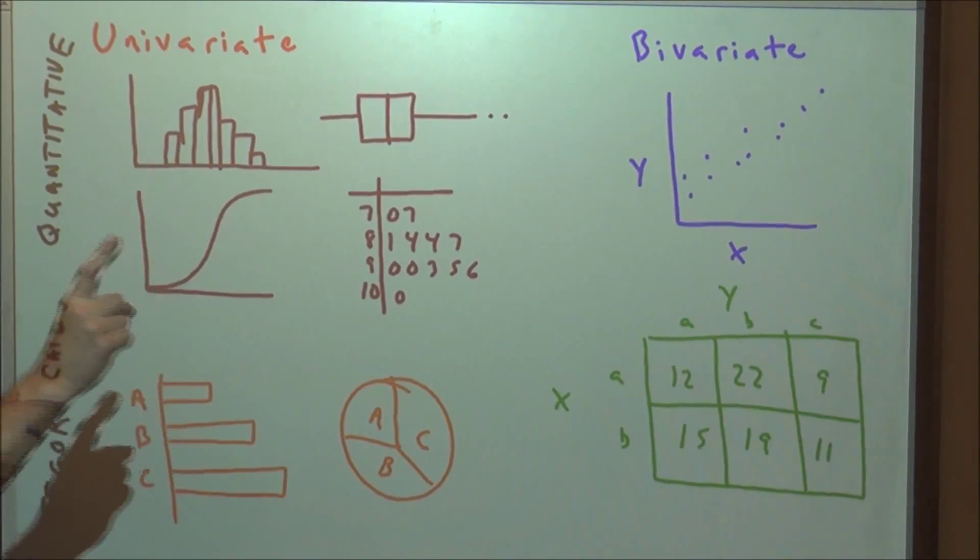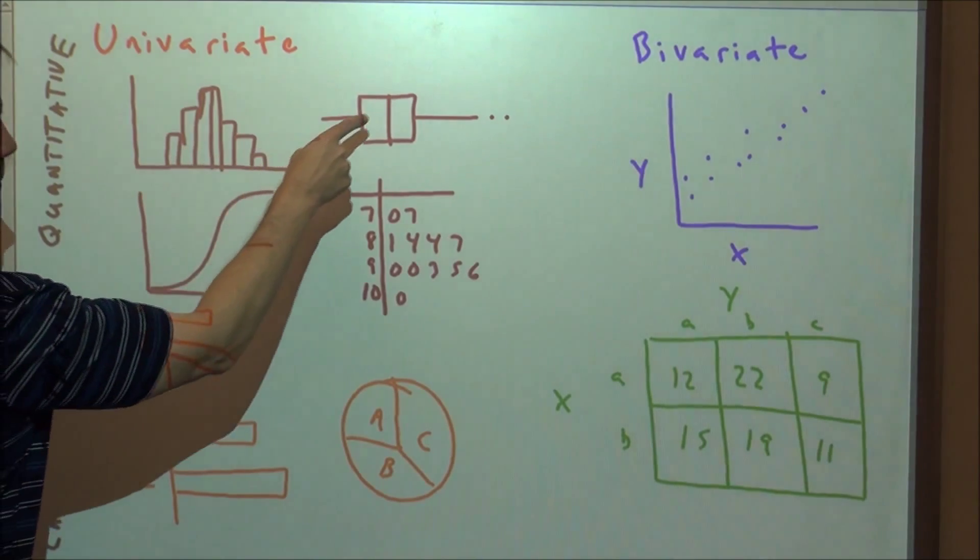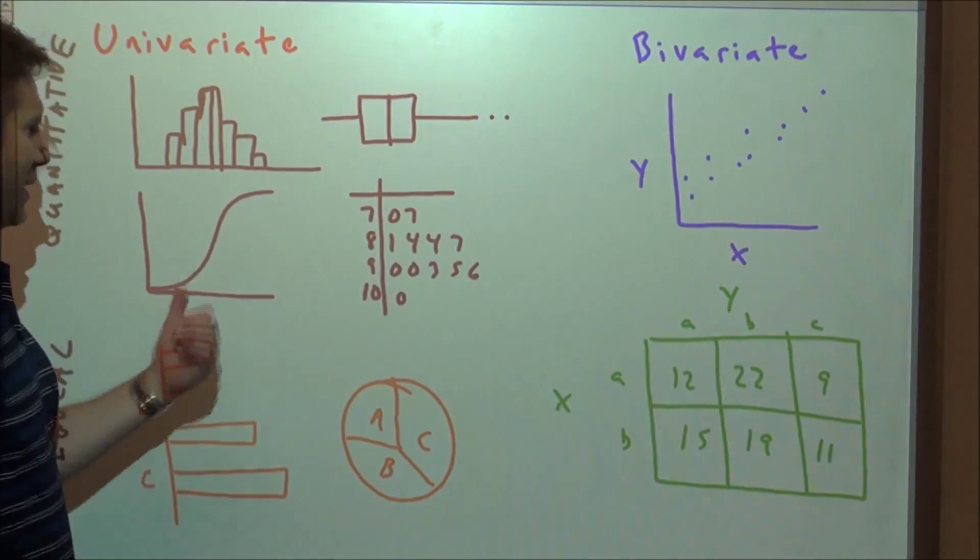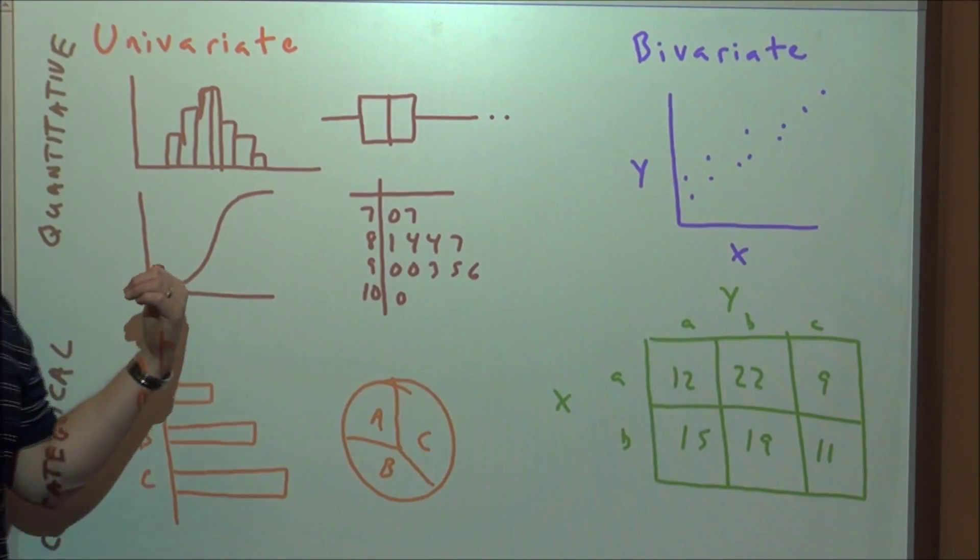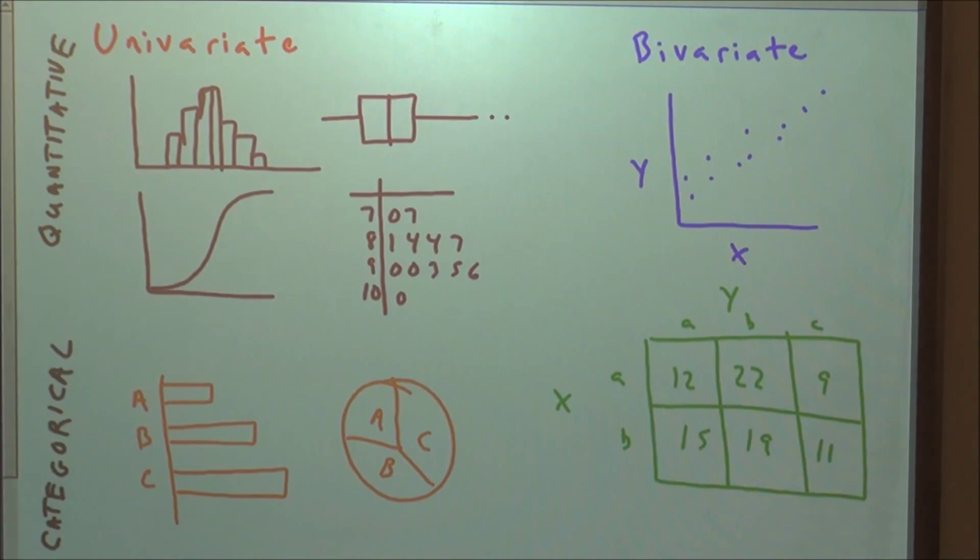If we have univariate data, meaning one variable like test scores or something like that, then we can display data with a histogram, a box plot, a stem plot, and something new to most of you called an ogive or cumulative frequency distribution. We'll get to that later.